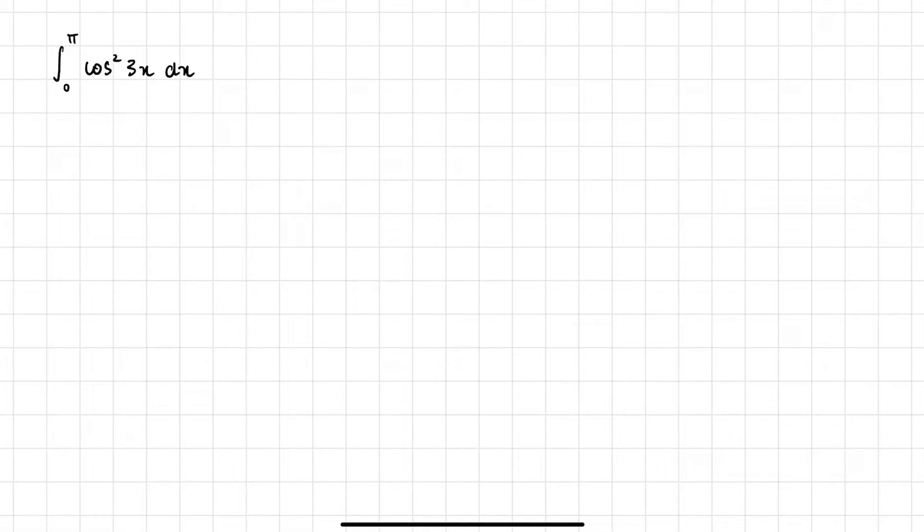Hey, what's up guys, I'm going to show you how to do this integration question here. So this is a trig one that has a square on it, cos squared. First of all, we can't integrate this the way it is. We can't integrate trig things that have squares or powers on them, so we're going to have to reduce it somehow.